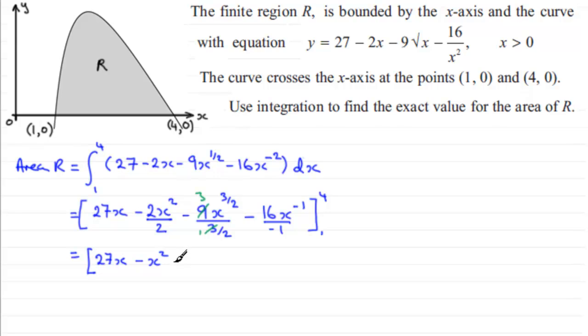So we've got minus 6x to the power 3 over 2. You could leave it as x to the power 3 over 2, but I'm going to change it to the square root of x all cubed. That's up to you.